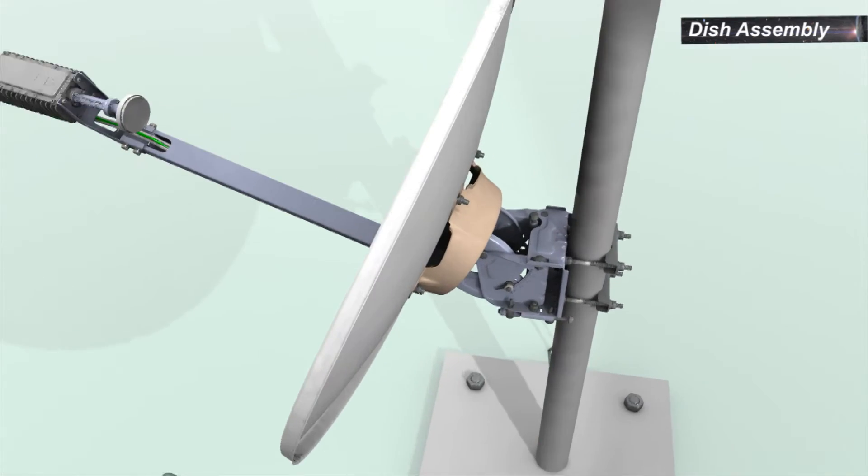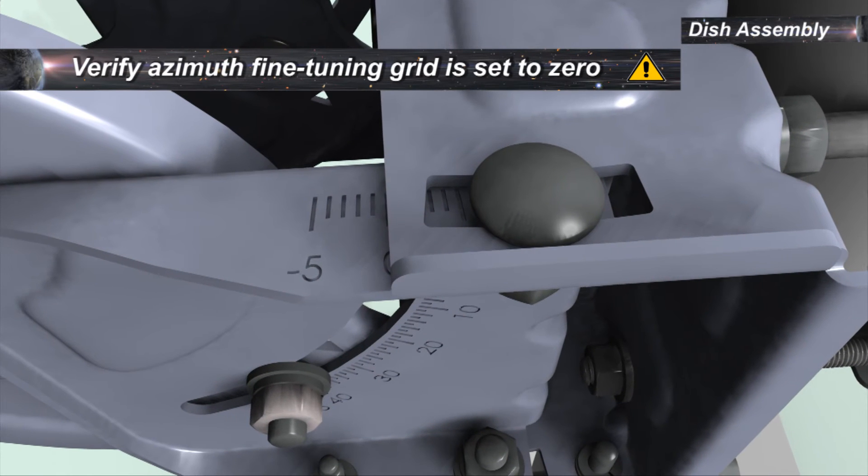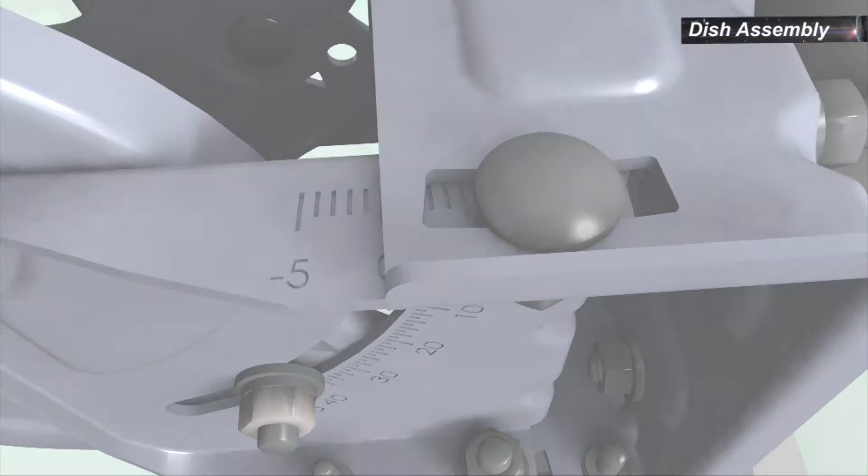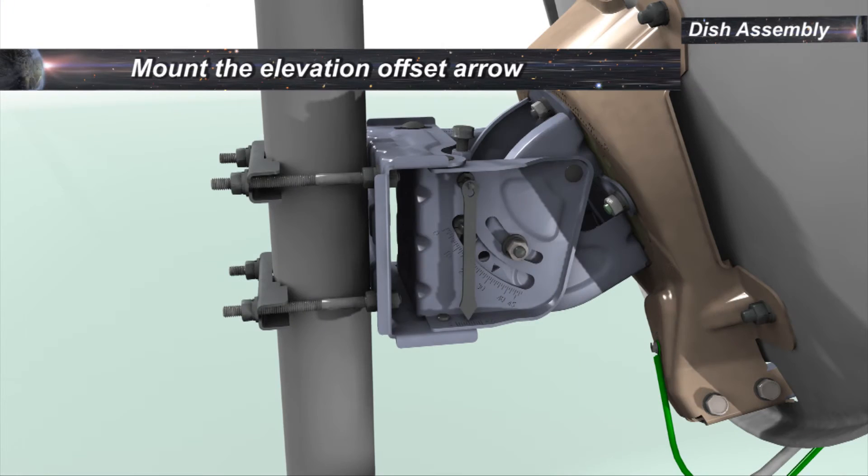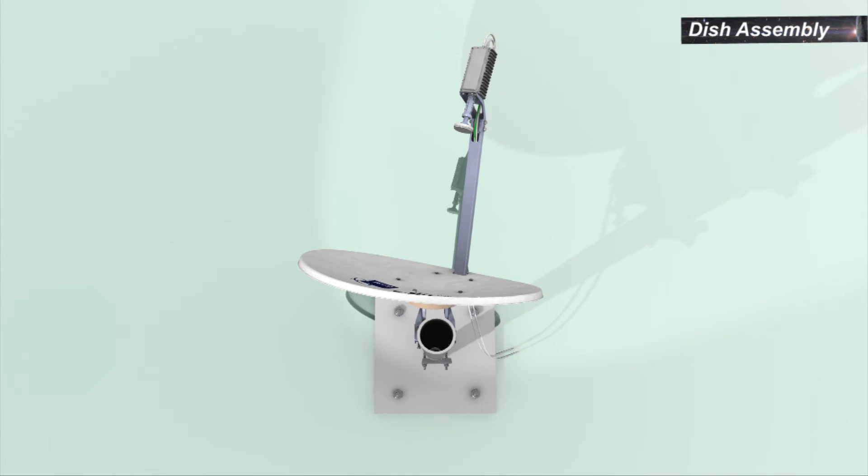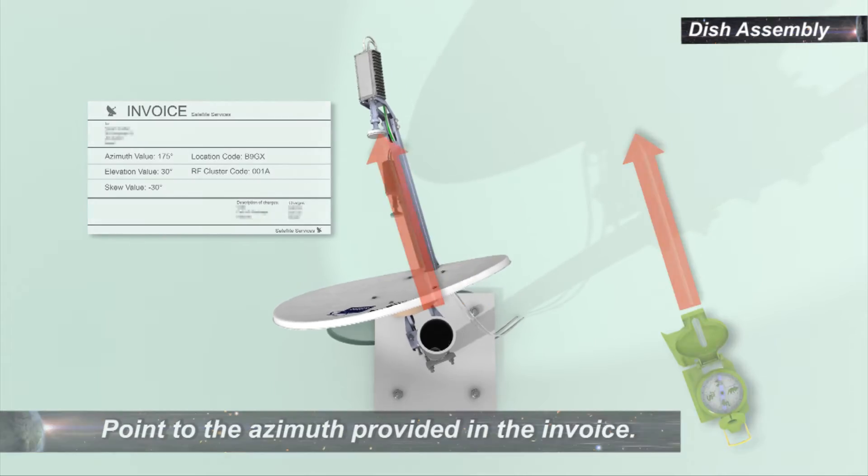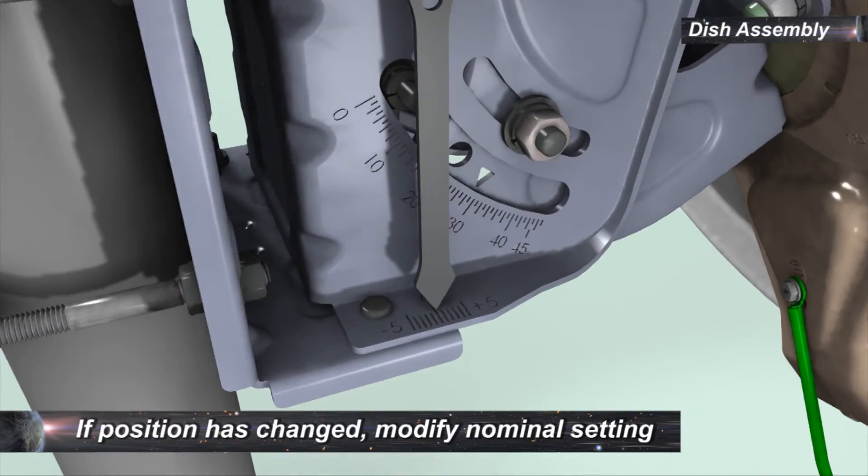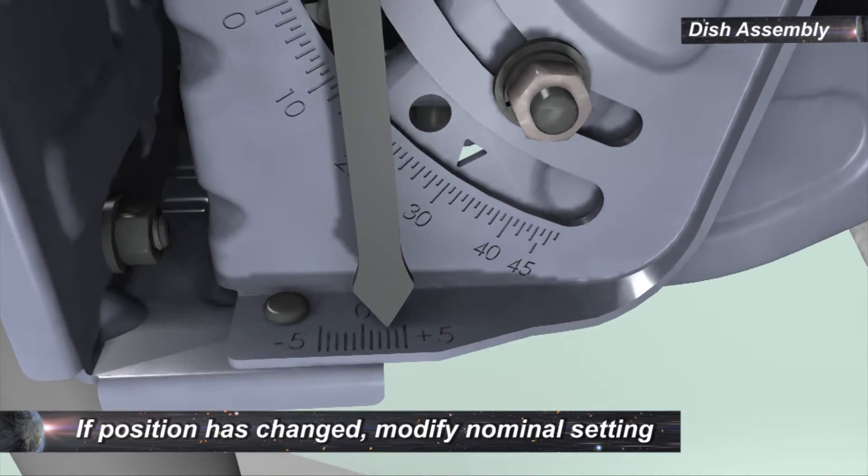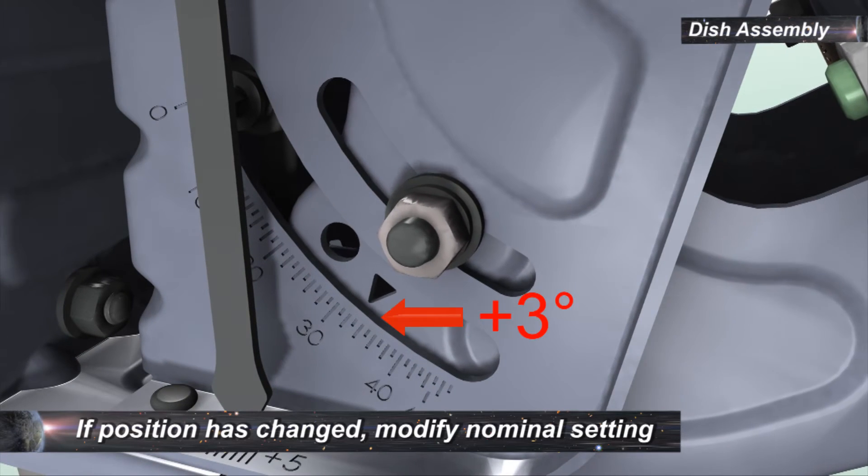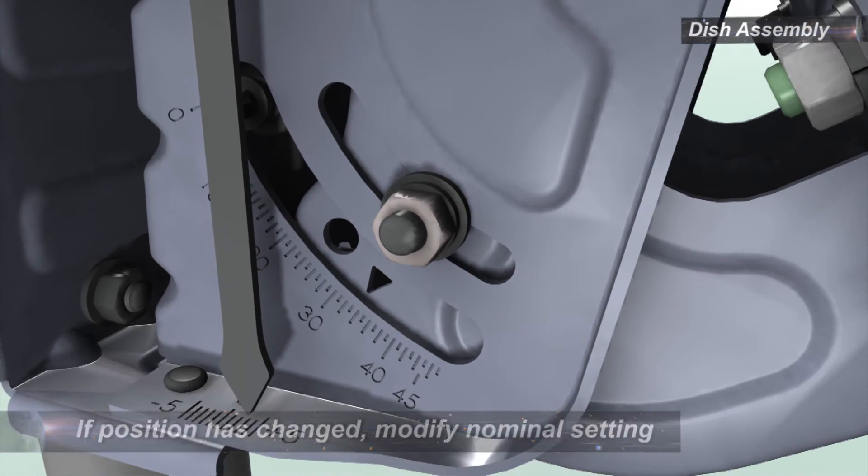To set the nominal azimuth, ensure that the fine-tuning grid is set to zero. Mount the elevation offset arrow. Using a compass, point the dish according to the azimuth value provided in the invoice. Check elevation offset arrow. If arrow is not pointing to the center of the grid, modify the nominal elevation to compensate for the offset.